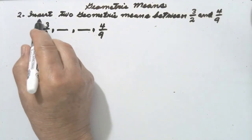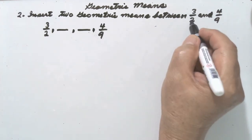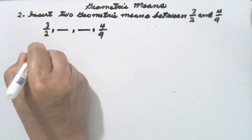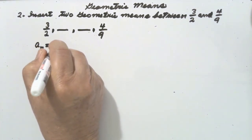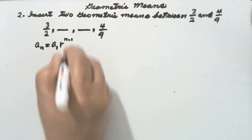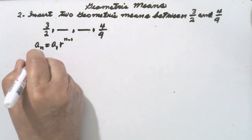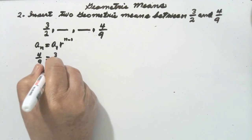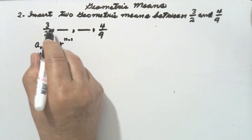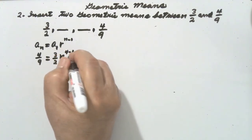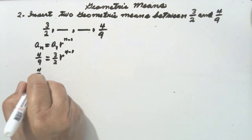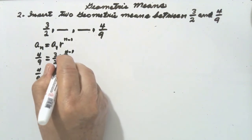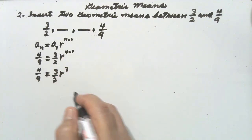Number 2: insert 2 geometric means between 3 over 2 and 4 over 9. Write the formula: a sub n is equal to a sub 1 times r raised to n minus 1. A sub n is 4 over 9, and a sub 1 is 3 over 2. Counting the terms — 1, 2, 3, 4 — n minus 1 is 3. So 4 over 9 is equal to 3 over 2 times r raised to the 3rd power.